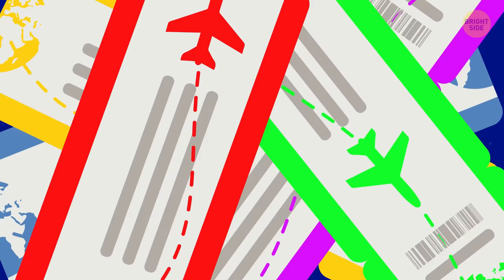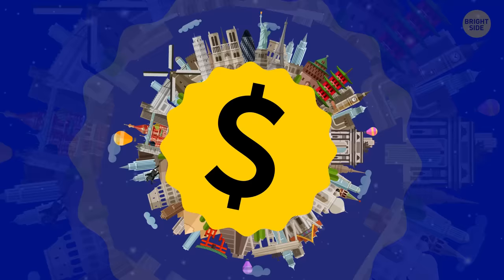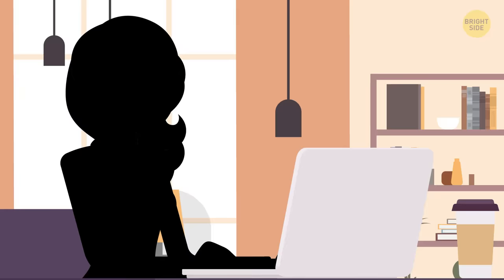When you've searched for certain tickets before, travel sites save this data and then only show you seemingly tempting offers compared to what you saw earlier. But they're still more expensive than they should be. You can avoid this by using incognito mode.